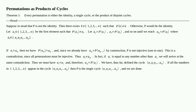So what have we accomplished? We've defined the cycle (a₁, a₂, ..., aₘ). By constructing this sequence we've built a cycle: it goes a₁ → a₂ → a₃ → ... → aₘ, and then back to a₁. If all the numbers in {1, ..., n} appear in the cycle (a₁, ..., aₘ), then P is the single cycle (a₁, ..., aₘ) and we are done — that's the second category.